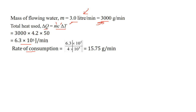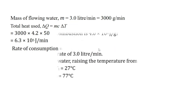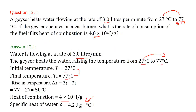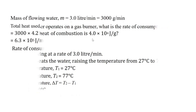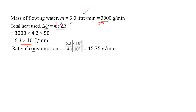This is joules per minute. In the question, the heat of combustion is given. This heat of combustion has to be divided by the total heat being used. So this is the rate of consumption.